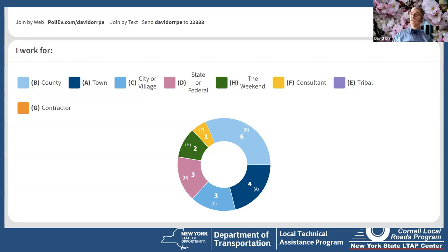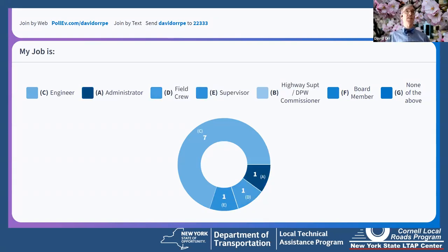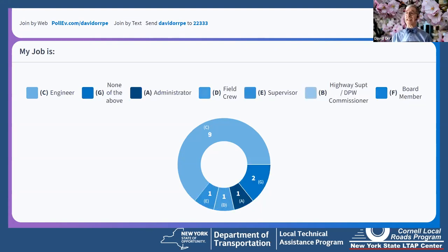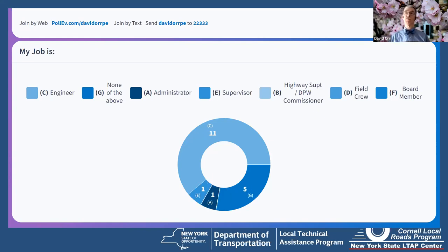What's your job? Are you an administrator, highway superintendent or DPW commissioner, a field crew person, an engineer, a board member, or none of the above? If you put none of the above, please throw it into the Q&A. Most of you are engineers, with one administrator and one supervisor. Someone put in 'transportation analyst trainee' — and another put GIS tech.